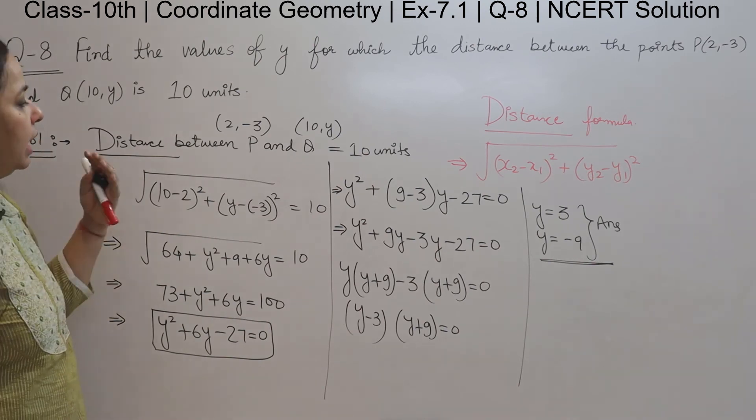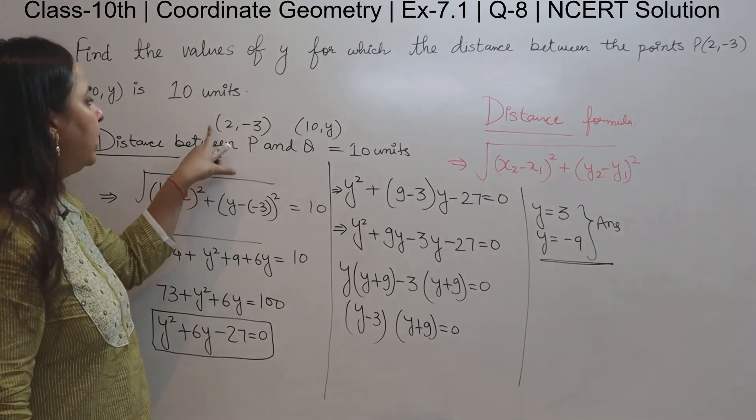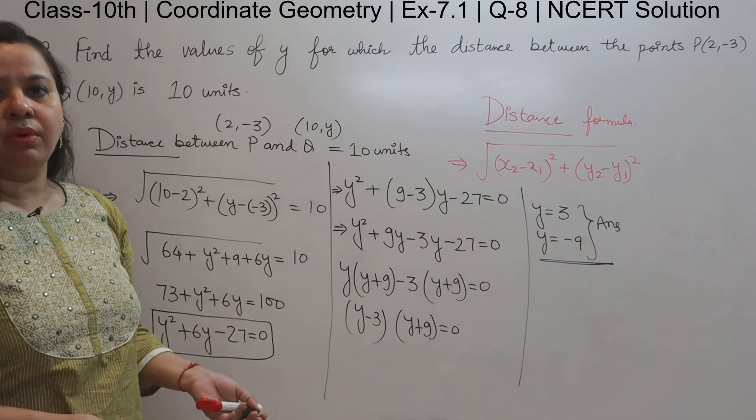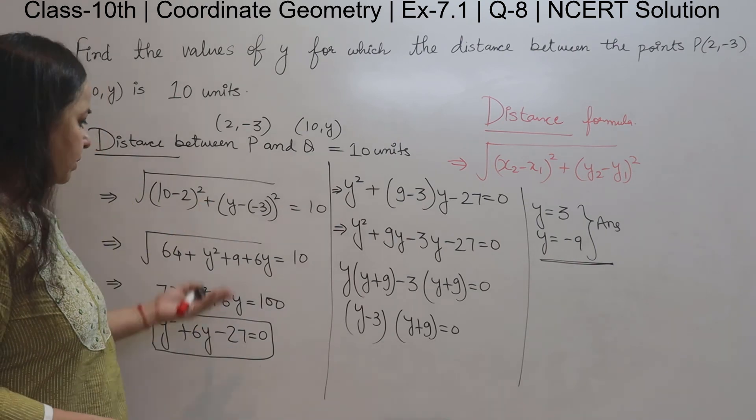This means 10 comma 3 and 10 comma negative 9 are at a distance of 10 units from the point 2 comma negative 3. So this is a very simple question where you just apply the distance formula and you can solve this very easily.